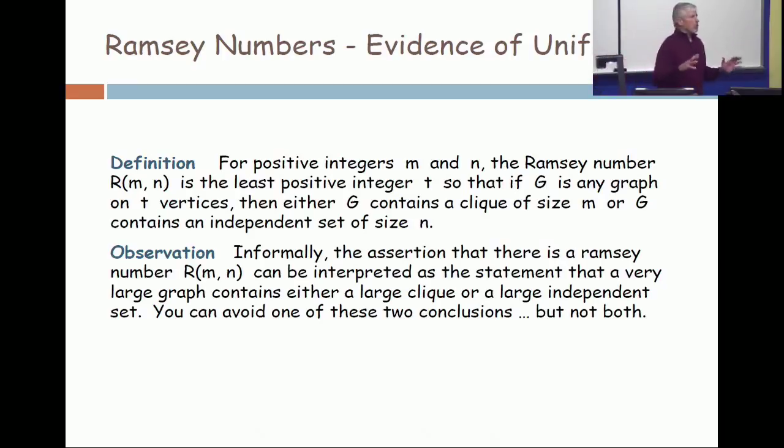When you look locally at a clique, it has complete regularity. All edges are present. When you look locally at an independent set of size n, it has complete regularity. It has no edges.